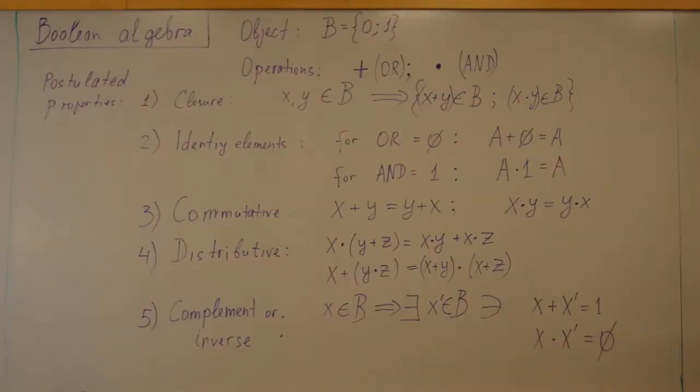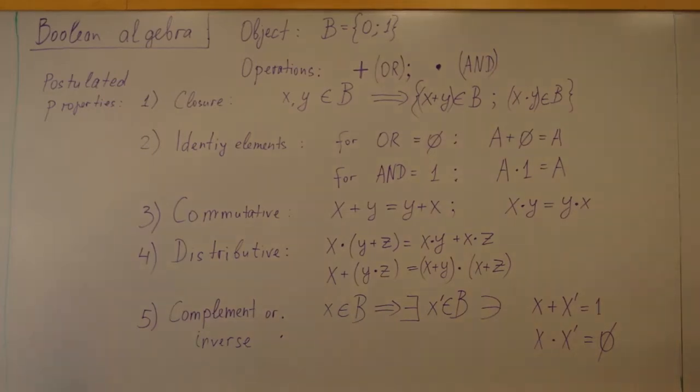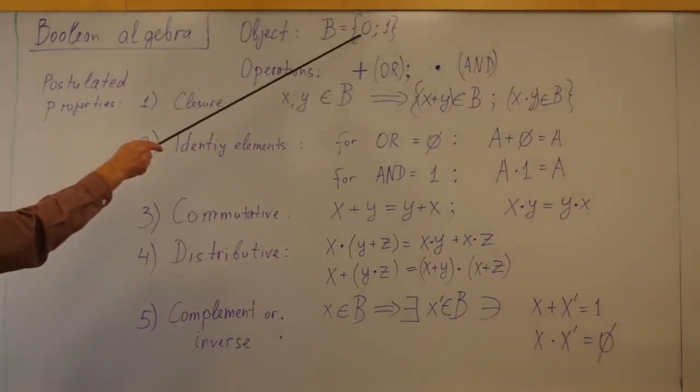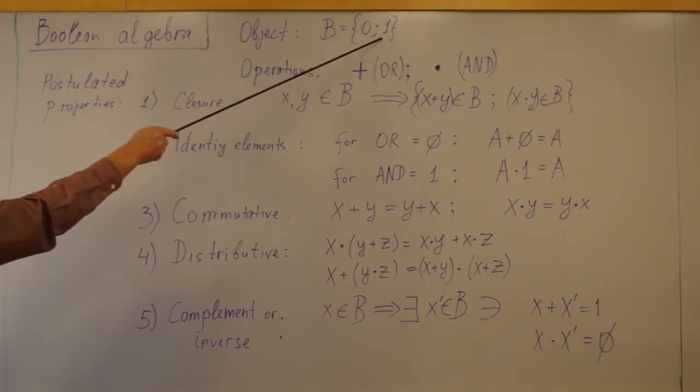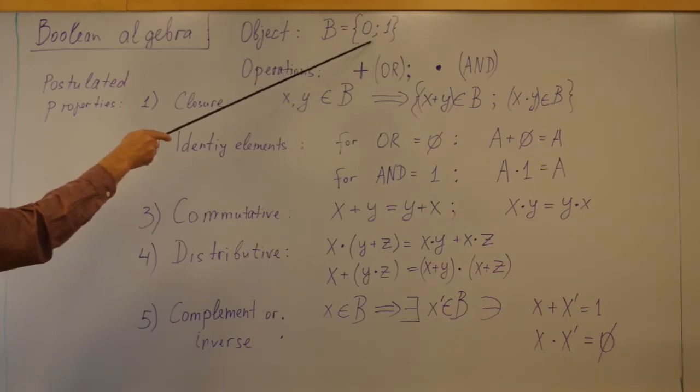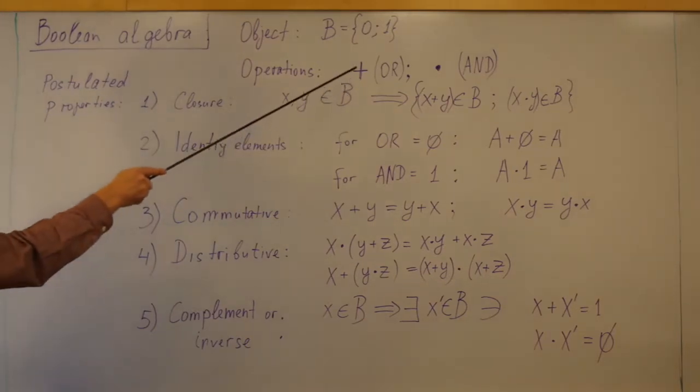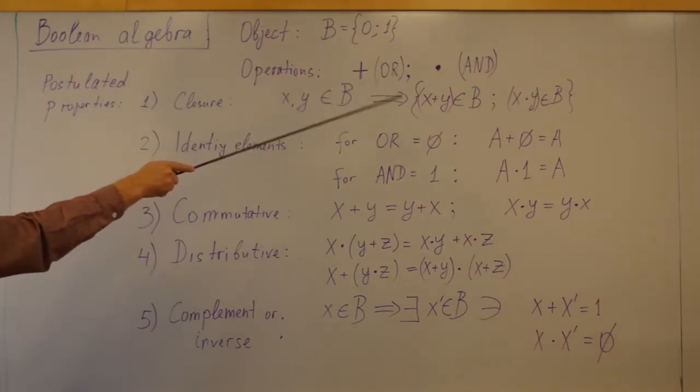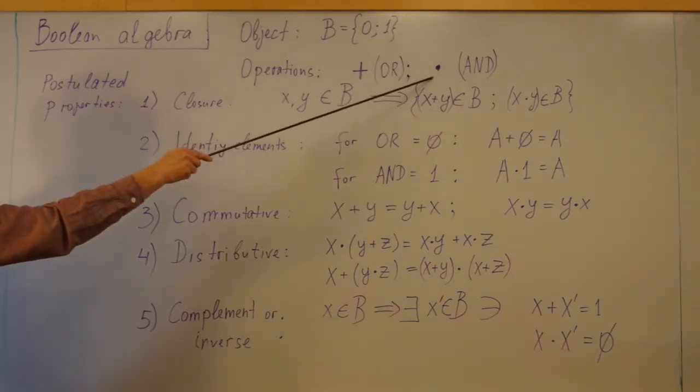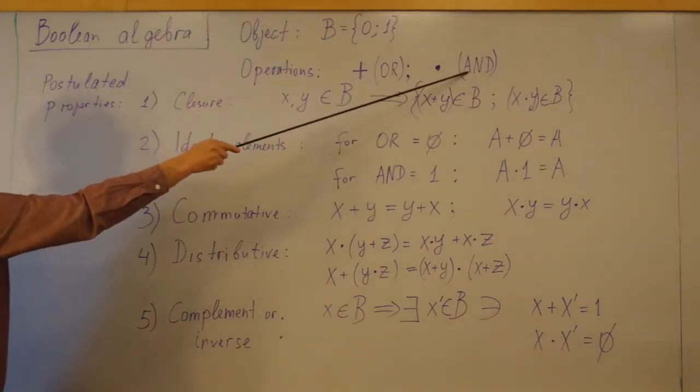Boolean algebra: Objects of Boolean algebra can have only two values, logical 0 or logical 1, or no and yes. Boolean algebra defines two possible operations: logical addition or operation, and logical multiplication and operation.